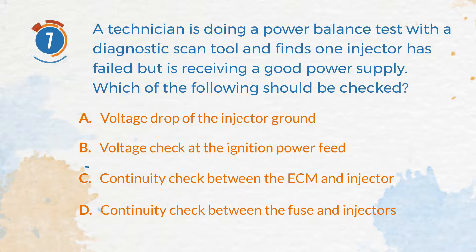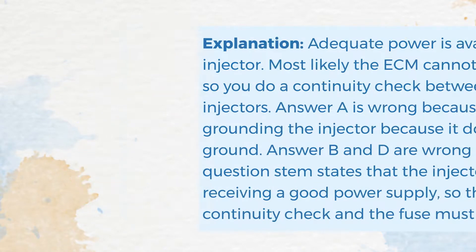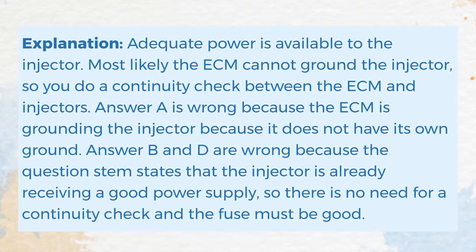The correct answer is C. Continuity check between the engine control module and injector. Explanation: Adequate power is available to the injector. Most likely the engine control module cannot ground the injector, so you do a continuity check between the engine control module and injectors. Answer A is wrong because the engine control module is grounding the injector since it does not have its own ground. Answers B and D are wrong because the question stem states that the injector is already receiving a good power supply, so there is no need for a continuity check and the fuse must be good.